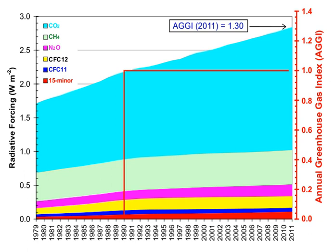The atmospheric lifetime of a species measures the time required to restore equilibrium following a sudden increase or decrease in its concentration in the atmosphere. Individual atoms or molecules may be lost or deposited to sinks such as the soil, the oceans and other waters, or vegetation and other biological systems, reducing the excess to background concentrations. The average time taken to achieve this is the mean lifetime.